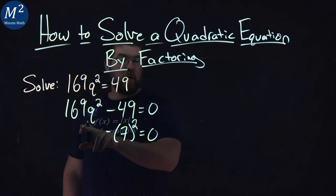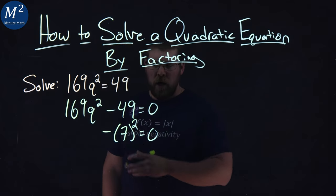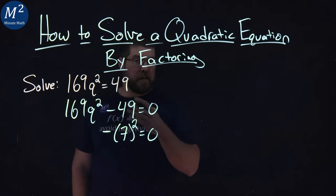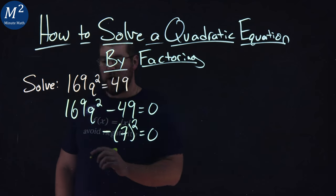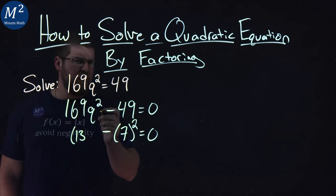If I can find the square of the first one, I might be able to do a difference of squares. Now 169 is 13², if you have that memorized, and q² is q².